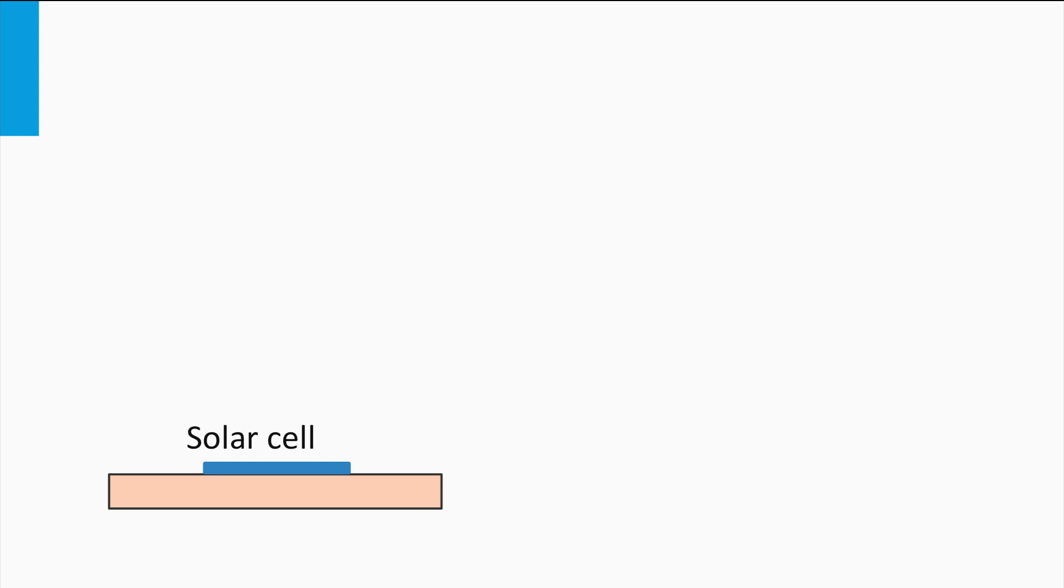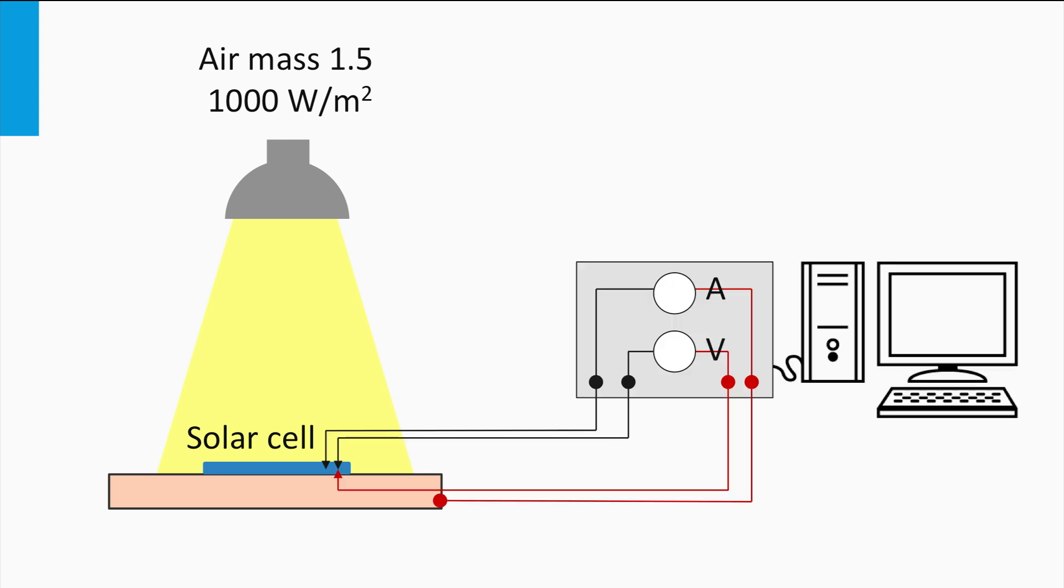How does such experimental setup look like? It consists of several components. The first component is a solar simulator, which is a light source that simulates both the shape of the AM 1.5 solar spectrum and an irradiance of 1000 W per square meter. Secondly, the setup has a voltage source which applies a varying voltage over the solar cell or solar panel. An ampere meter measures the current generated by the solar device at every voltage. Finally, a temperature controlled substrate guarantees that the solar cell is at the required standard temperature of 25 degrees Celsius.